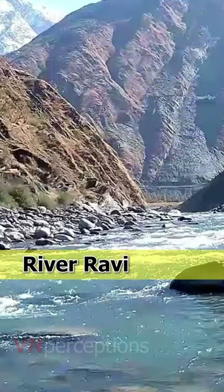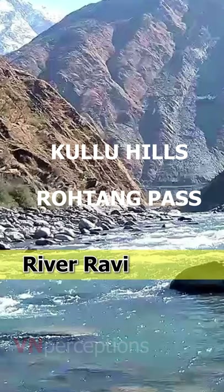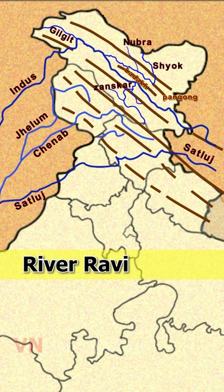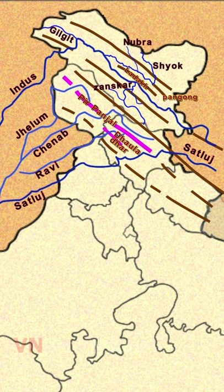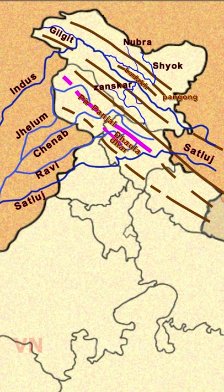River Ravi originates in the Kulu Hills near Rotang Pass in the Kangra district of Himachal Pradesh. It drains the area between the Pir Panjal and Dhauladhar Range. After crossing Chamba, it takes a southward turn and cuts a deep gorge in the Dhauladhar Range, finally enters the Punjab Plain, and joins Chenab in Pakistan. River Bhyas rises from the south of Rotang Pass in Kulu and flows into the Satlaj River in Punjab. It flows through the Mandi district and enters the Kangra district at Sandhol. This river forms a boundary between Amritsar and Kapurthala and finally joins Satlaj.